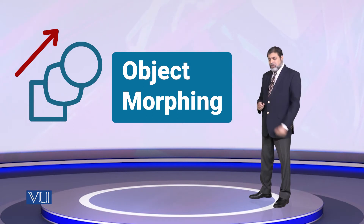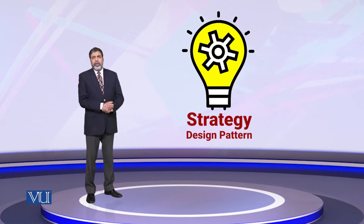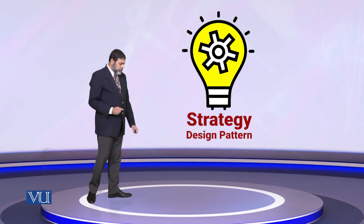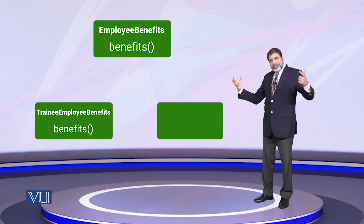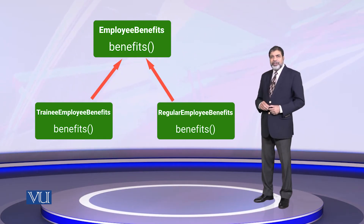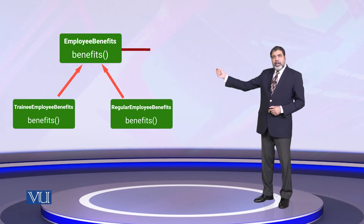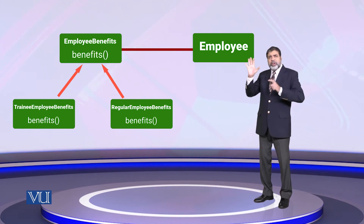So this is a big problem. How can we solve this? Fortunately, the Strategy design pattern is a very useful pattern here. The employee is still the employee, but what differs is the benefits algorithm — benefits for the training employee versus benefits for the regular employee. We encapsulate what varies, which is the benefits calculation.